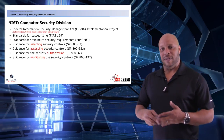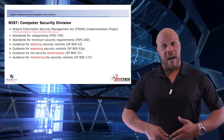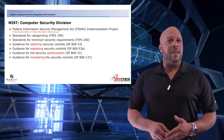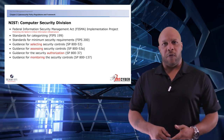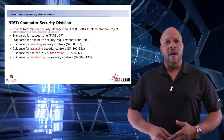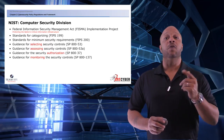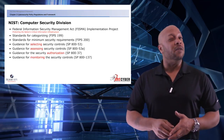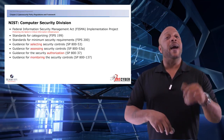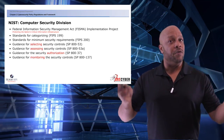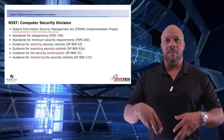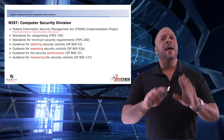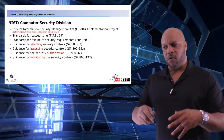When it comes to NIST, the Computer Security Division has several documents you must be familiar with. Starting with the FISMA implementation project, then the standards for categorizing — that is FIPS 199 — the standards for minimum security requirements, FIPS 200, guidance for selecting security controls which would be Special Publication 800-53, guidance for assessing those controls which would be 800-53A, the guidance for security authorization — the original 800-37 — and how to set up your continuous monitoring, 800-137.